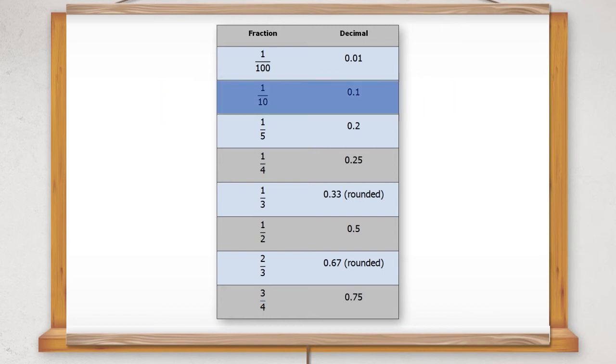1 tenth is 0.1, 1 quarter is 0.25, 1 third is 0.33, 1 half is 0.5, 3 quarters is 0.75.